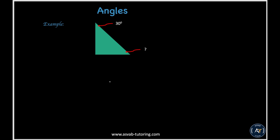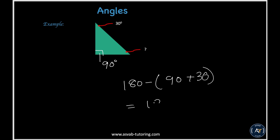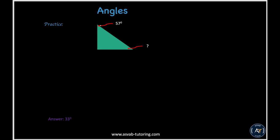Now we'll learn how to find a missing angle of a triangle. This is a right triangle with a 90-degree angle. Since a triangle has 180 degrees in total, the missing angle equals 180 minus 90 plus 30, which is 180 minus 120, giving 60 degrees. In the practice problem, a right triangle with one side of 57 degrees is given — find the missing angle.